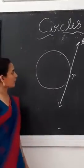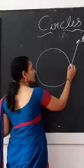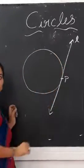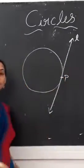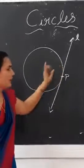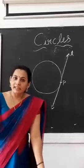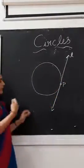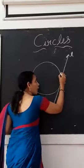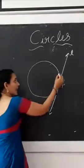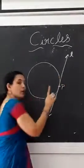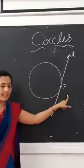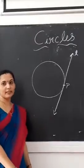How many tangents can be drawn on a circle? We know that a circle is made up of infinite number of points, so at each point on a circle we can draw a tangent. Therefore, we can draw an infinite number of tangents on a circle. But at a single point, only one tangent can be drawn. Be very careful: infinite tangents can be drawn on a circle, but at a single point only one tangent.